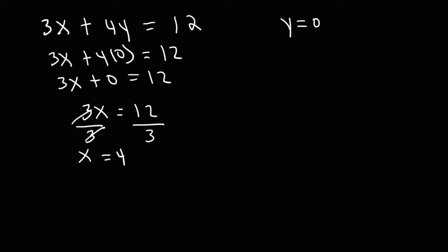12 divided by 3 is 4, so the x-intercept is x equals 4. If you want to write it as an ordered pair, x is 4 and y is 0, giving us the point (4, 0).